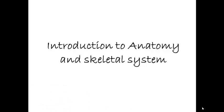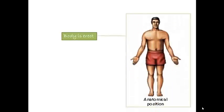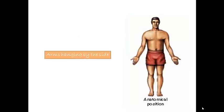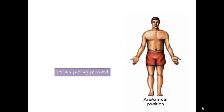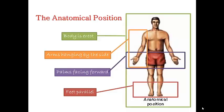We will start by discussing the anatomical position. In this position, the body needs to be erect and straight. Both arms need to be hanging by the side, parallel. The palms need to be facing forward or upward, known as supination. And both feet need to be forward, parallel to each other. Together, this is known as the anatomical position.